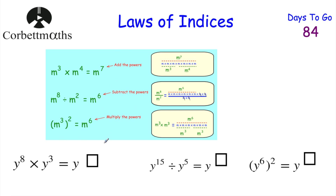Here are some examples — press pause and work out the missing powers. y⁸ × y² = y to the power of 10 (add the powers: 8 + 2 = 10). y¹⁵ ÷ y⁵ = y to the power of 10 (subtract: 15 − 5 = 10). (y⁶)² = y to the power of 12 (multiply: 6 × 2 = 12).